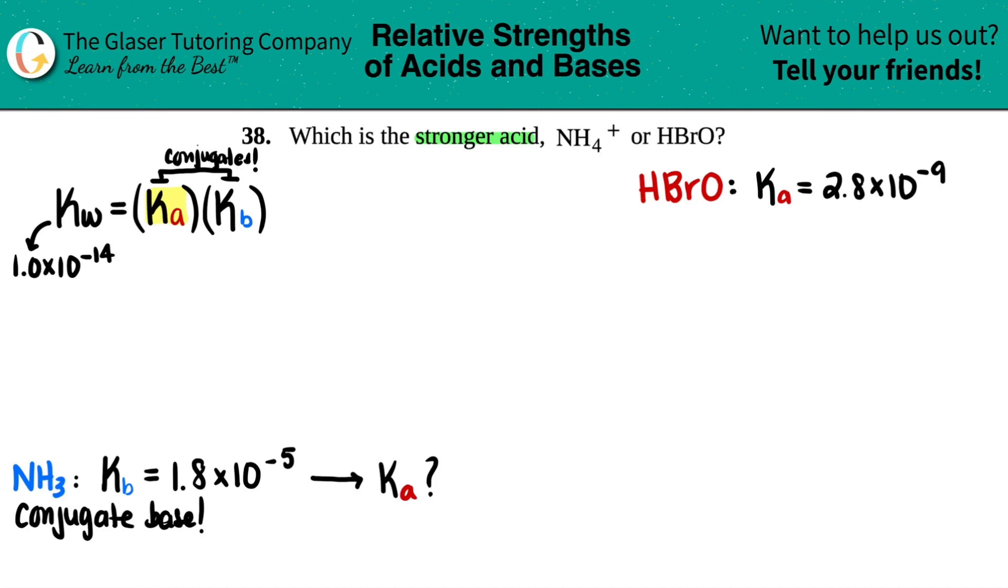So now if we want to solve for Ka, if I just rearrange this formula, or if you want to just plug in your numbers here, that's fine with me, but it's just easier on the screen to do it as, you know, changing it and then plugging in the numbers. This would just be equal to Kw divided by Kb.